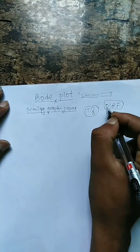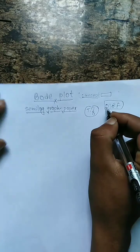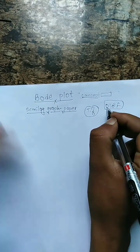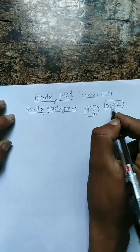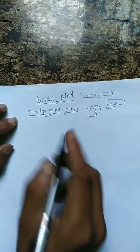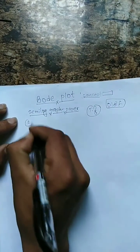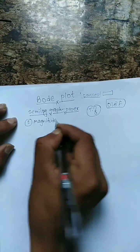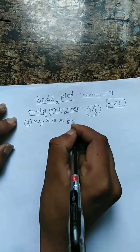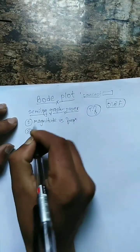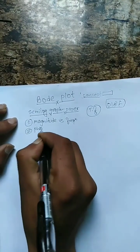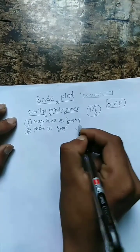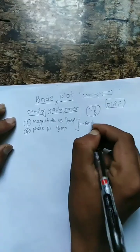Plot the straight-line asymptotic magnitude response for the given transfer function. A Bode plot consists of two parts: the Magnitude vs. Frequency plot and the Phase vs. Frequency plot. It is a Bode plot.